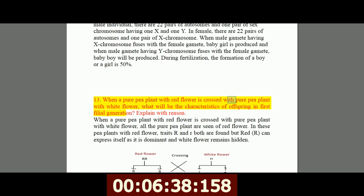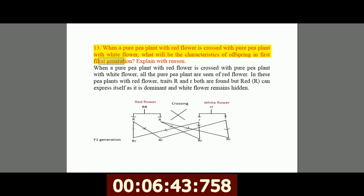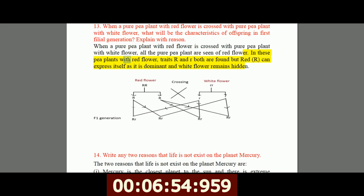13. When a pure pea plant with red flower is crossed with pure pea plant with white flower, what will be the characteristics of offspring in first filial generation? Explain with reason. When a pure pea plant with red flower is crossed with pure pea plant with white flower, all the pure pea plants are seen of red flower. In these pea plants with red flower, traits R and R both are found but red, R, can express itself as it is dominant and white flower remains hidden.